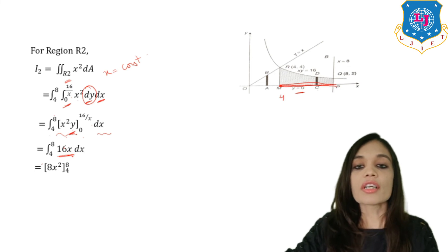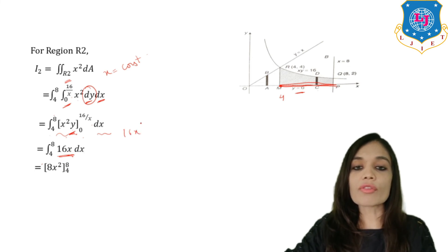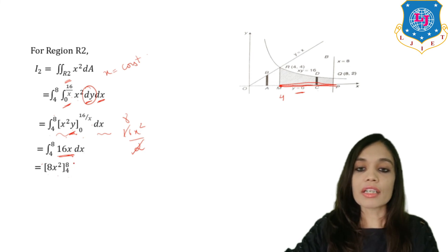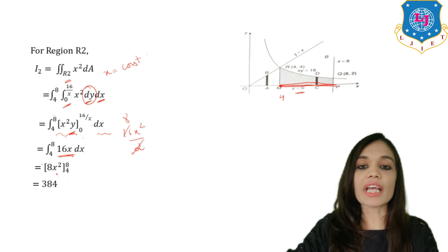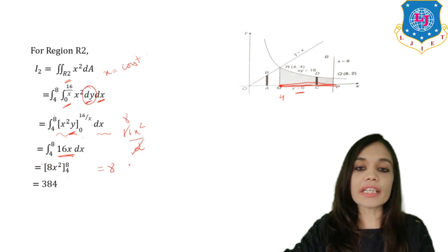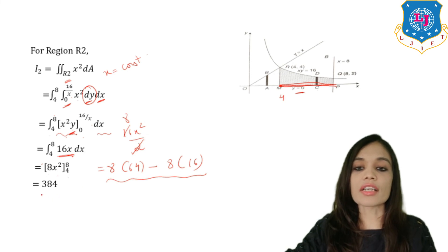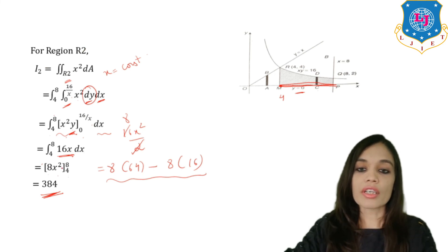Integrating 16x with respect to x: 16 · x²/2 = 8x², with limits 4 to 8. Putting the upper limit: 8 × 64 = 512. Putting the lower limit: 8 × 16 = 128. So 512 − 128 = 384. This is the answer of the integration over region R2, that is 384.